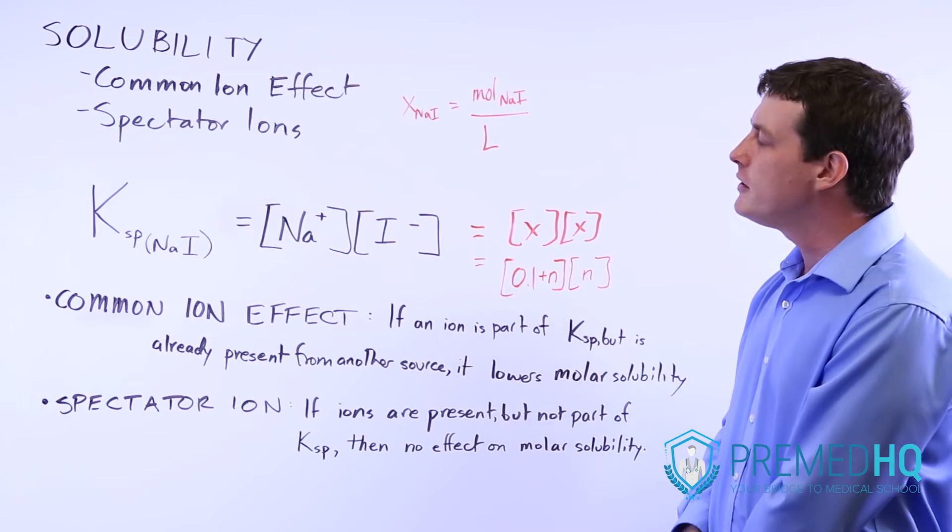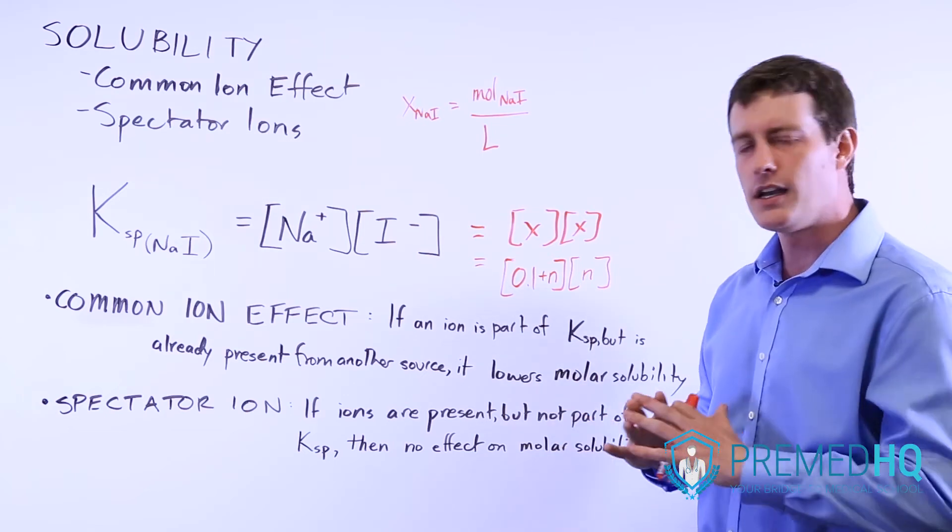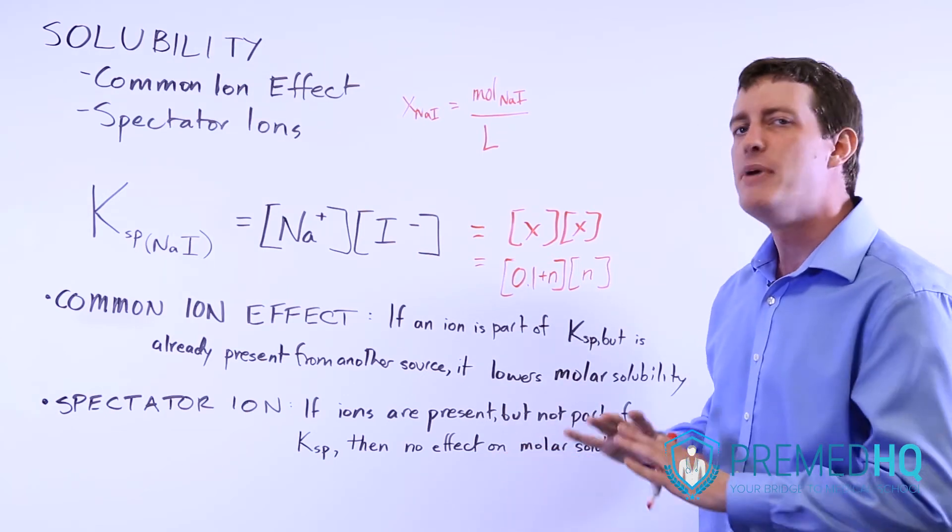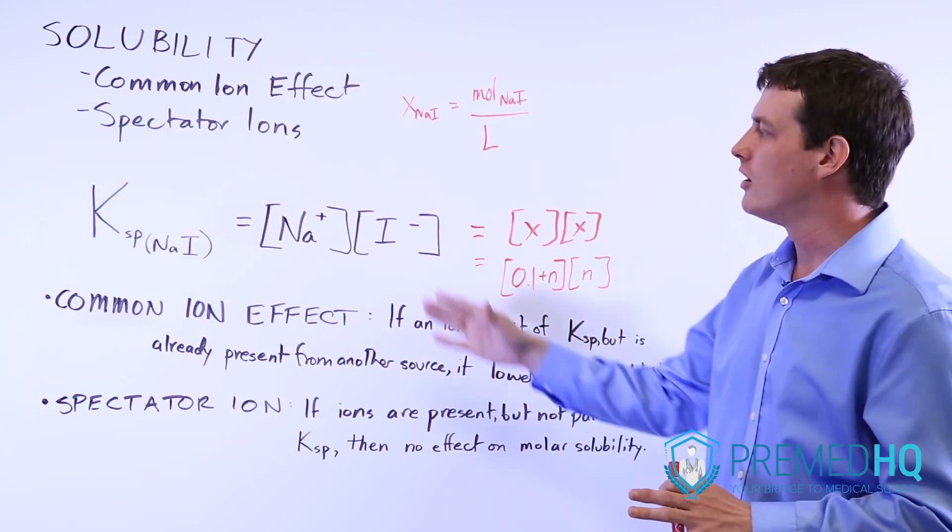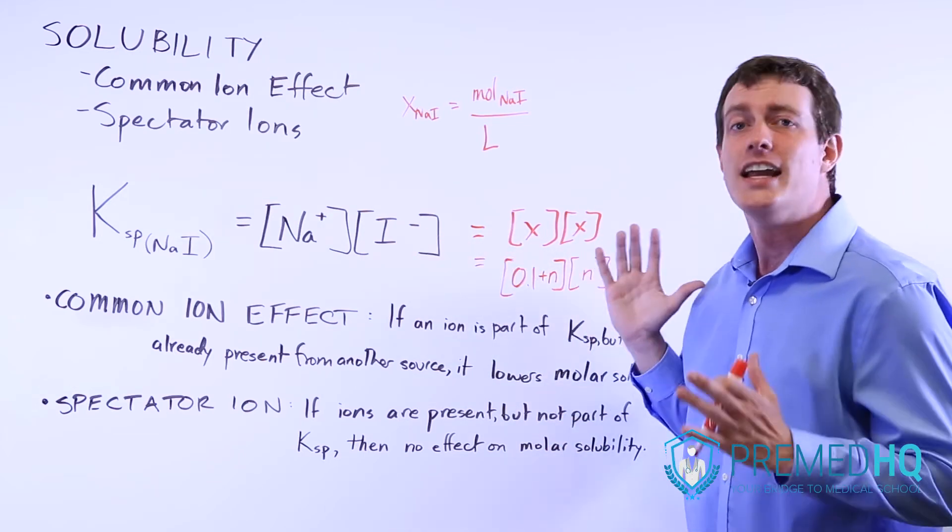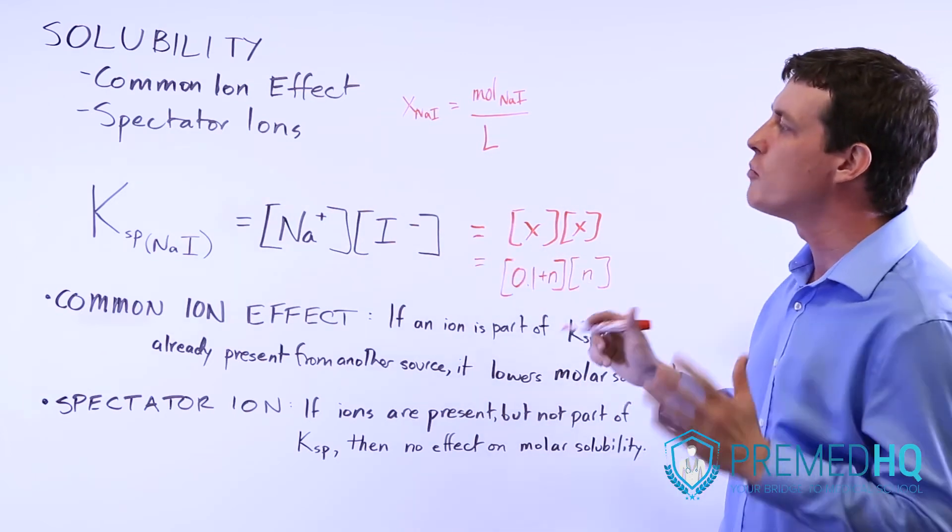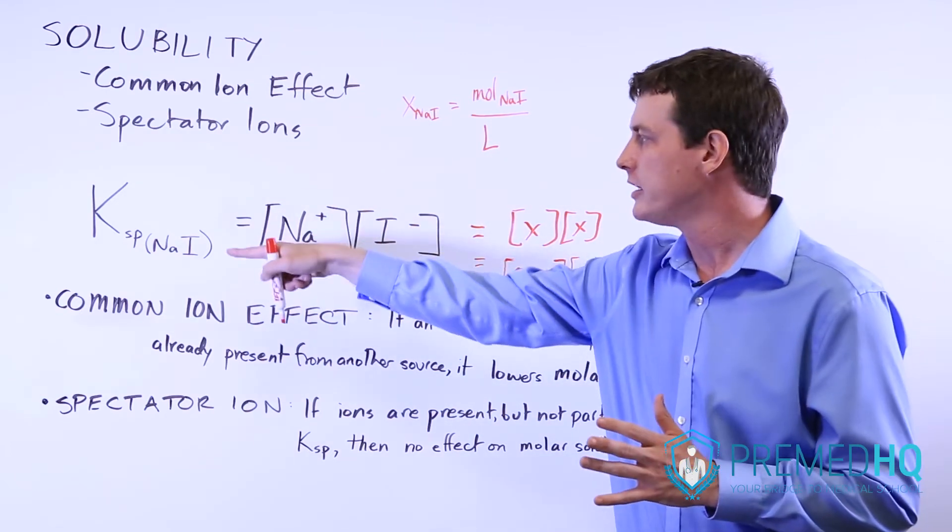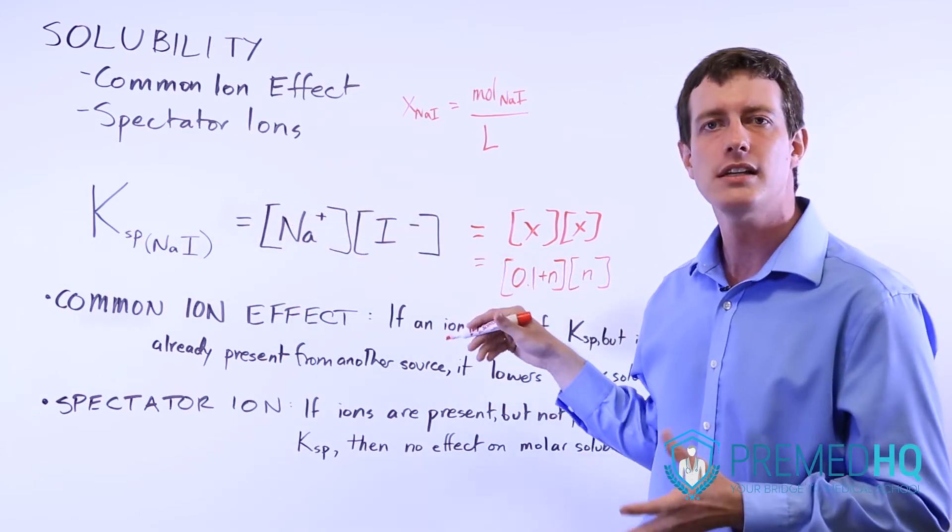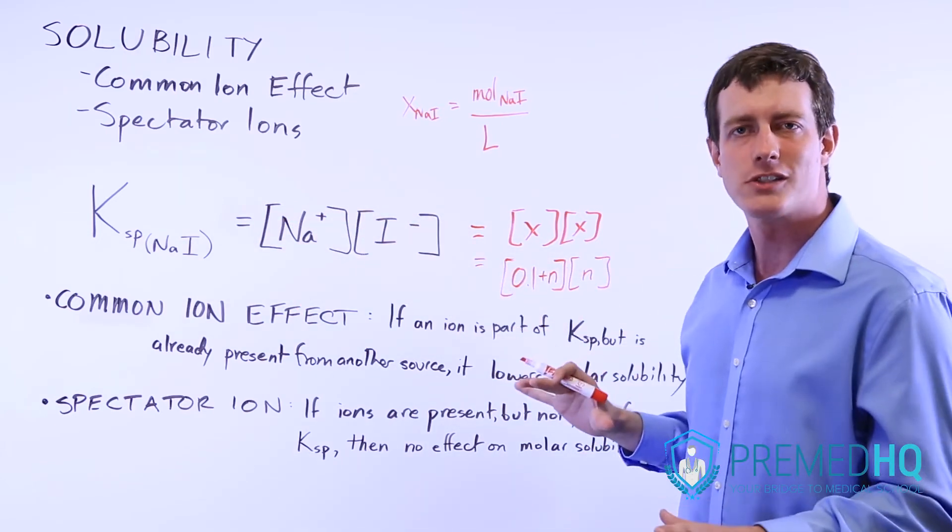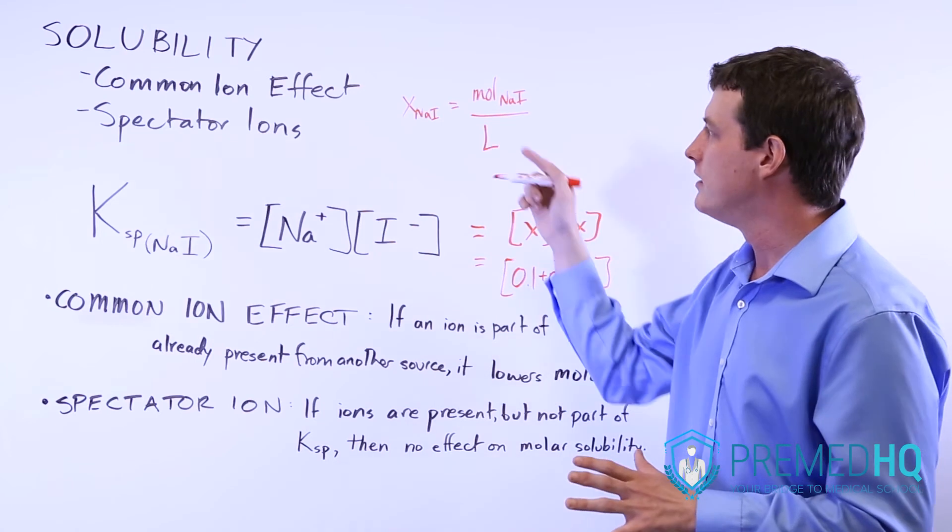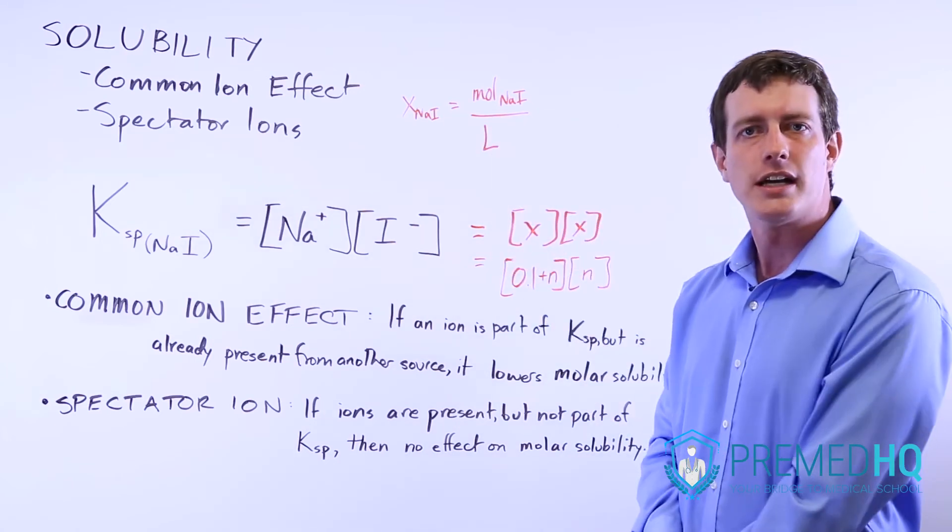Now, if you have a solution with a number of ions in it already, but none of those ions are sodium or iodine, then you have what's called a spectator ion. Because those ions don't participate in the KSP, they don't participate in the solubility product, that's going to have no effect whatsoever on the molar solubility of sodium iodide.